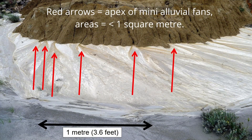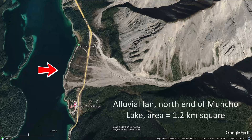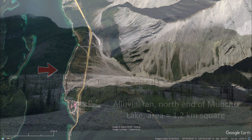Also, alluvial fans come in various sizes ranging from very small — say less than a meter square or 11 square feet — up to very extensive, reaching almost 20,000 square kilometers or 7,700 square miles in area.